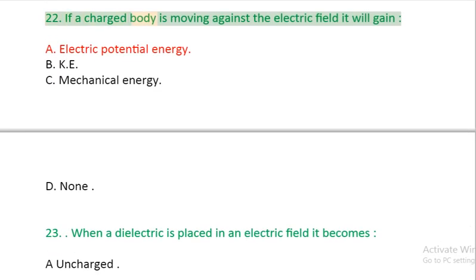Question 22: If a charged body is moving against the electric field it will gain: A: electric potential energy. B: kinetic energy. C: mechanical energy. D: none.